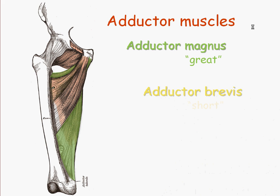As a matter of fact, those muscles are adductor muscles as well. For example, the one highlighted in yellow is adductor brevis. And brevis is a Latin word that means brief or short. And as you can see, it is very short compared to adductor magnus.